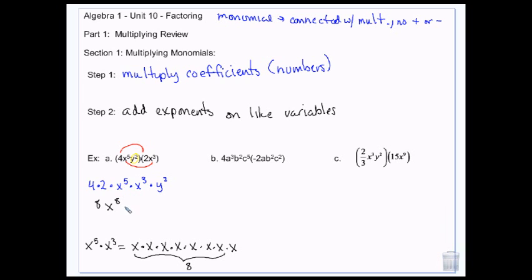The numbers that are there get multiplied, then the x's that are there have the exponents added, and then the y, since there's nothing like it, just stays the same as it is.